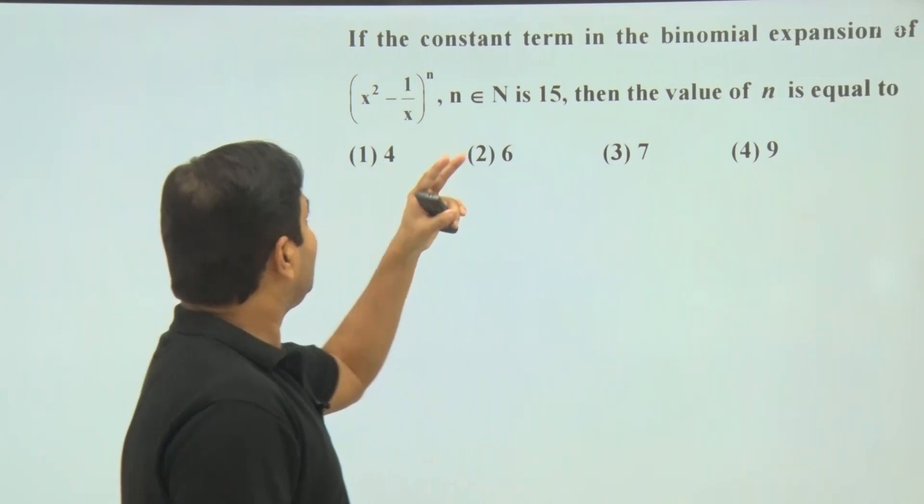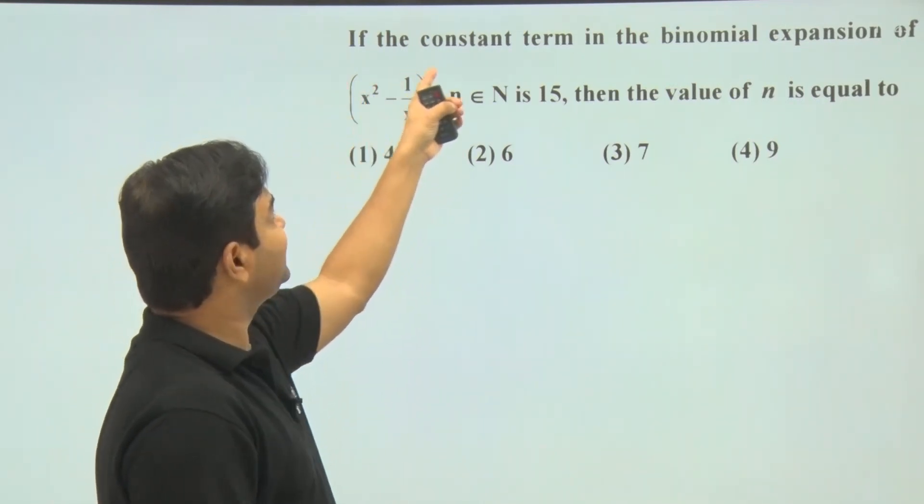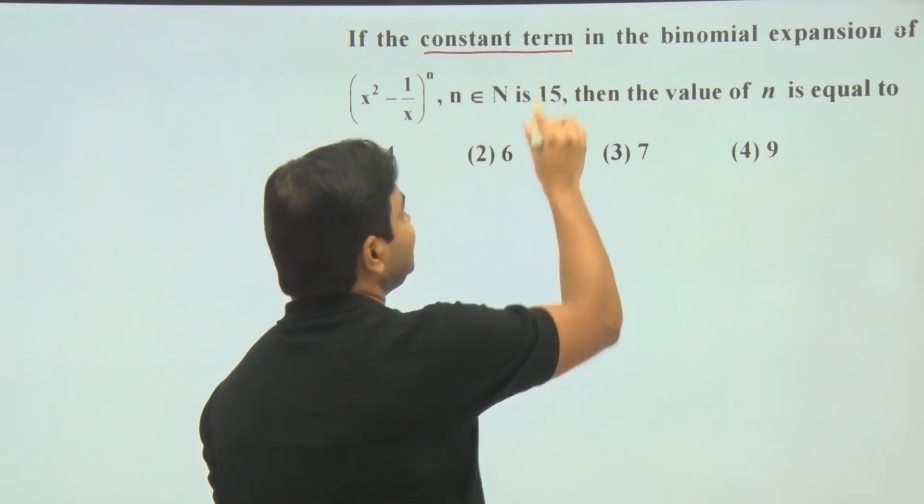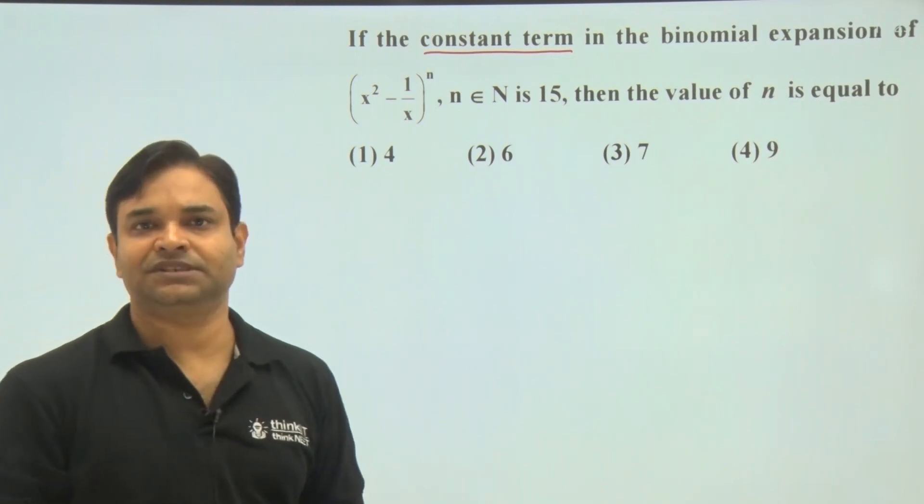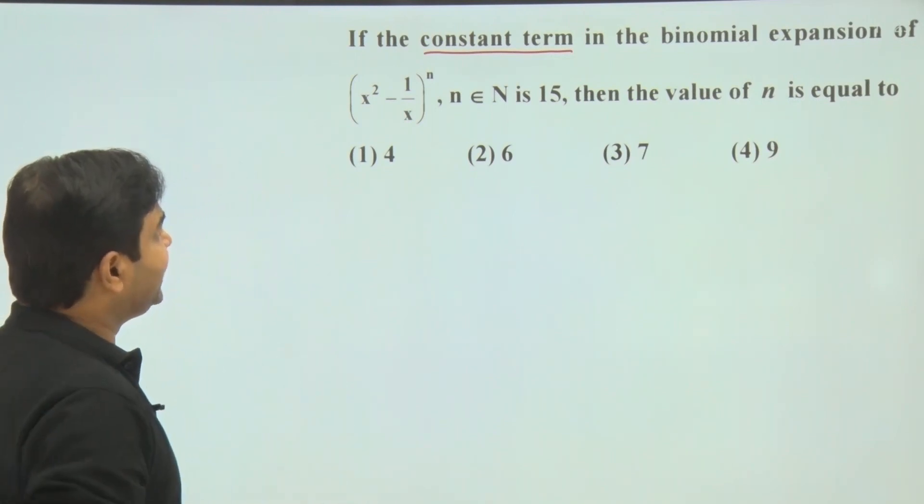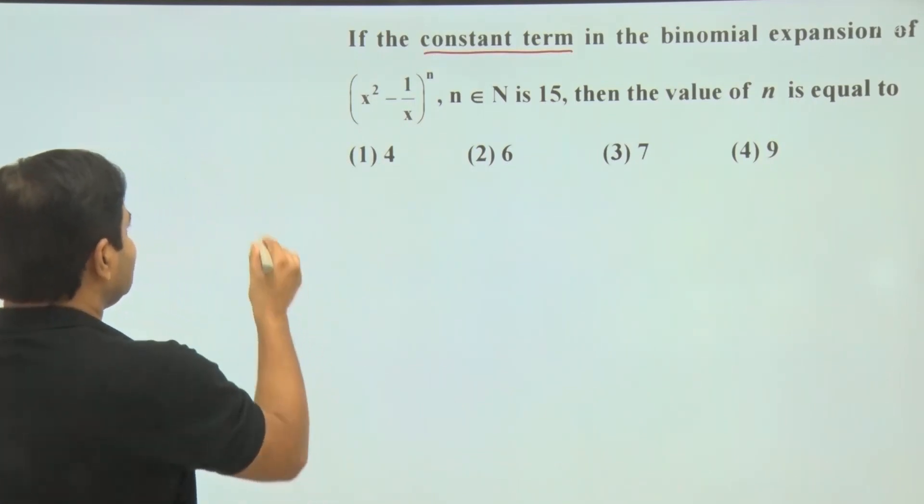There is a binomial expansion of this expression and it is given that the constant term - constant term means free from x, power of x must be zero - and if this is 15, then find the value of small n.